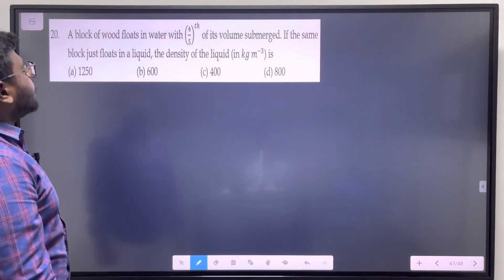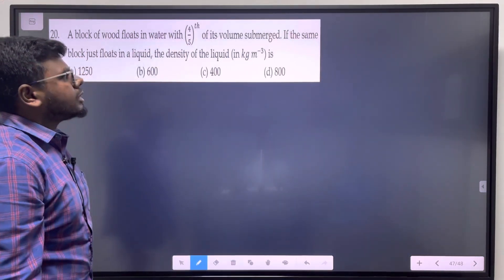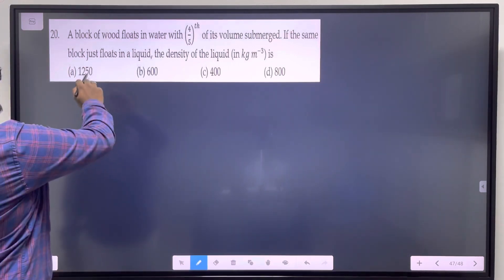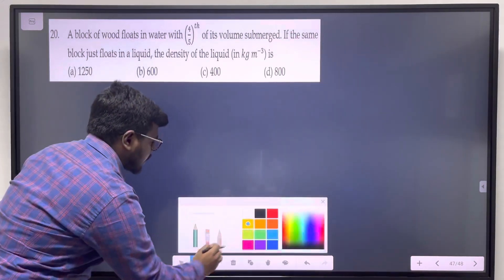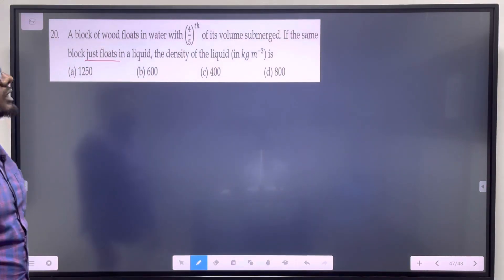A block of wood floats in water with 4/5 of its volume submerged. If the same block just floats in a liquid, find the density of the liquid.